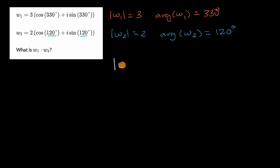So what's the resulting modulus of W one times W two? Well, we're just going to scale up W two's modulus by W one's modulus, or essentially we're just going to multiply the two. So this is going to be equal to six, three times two.